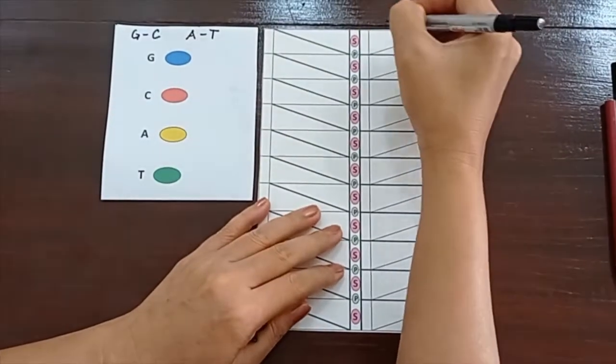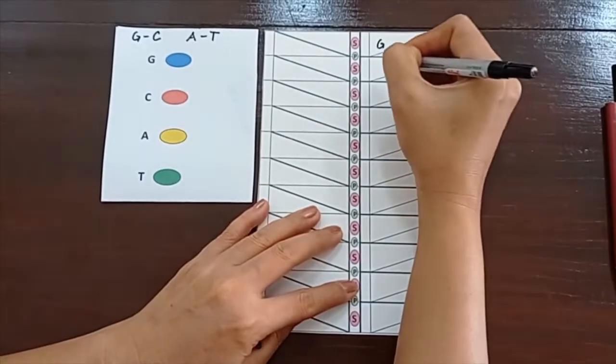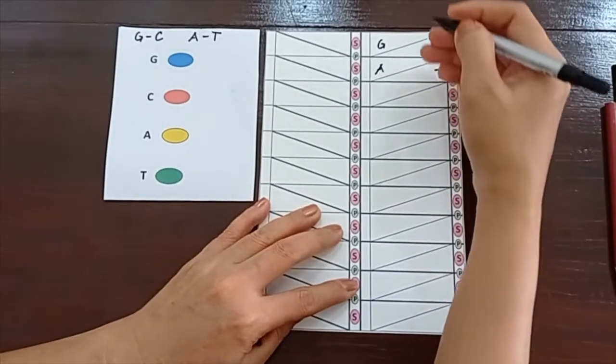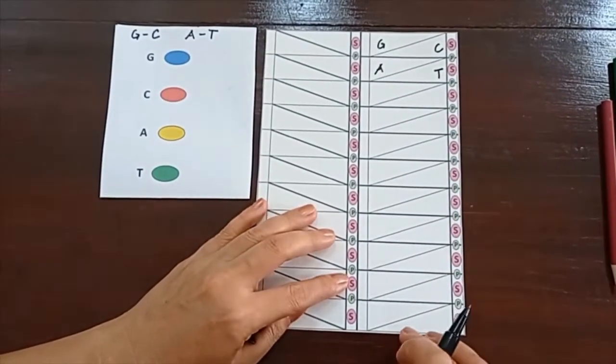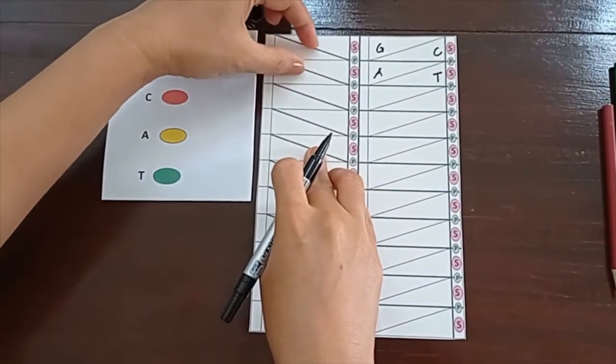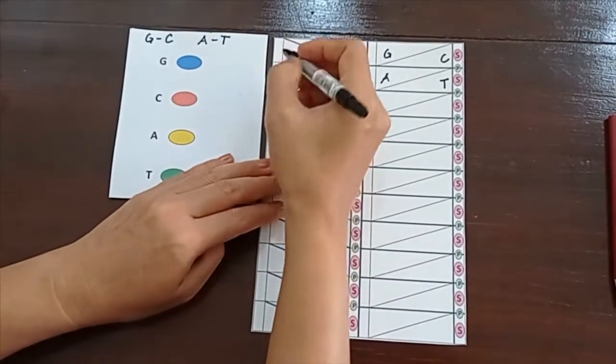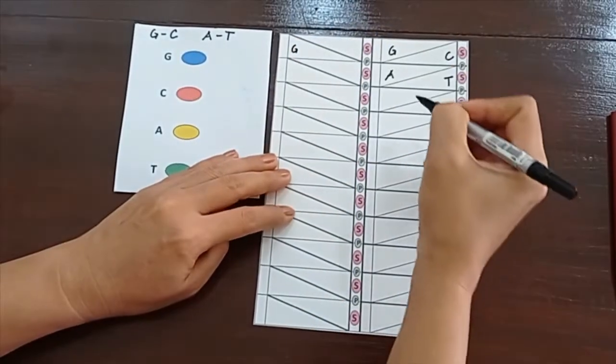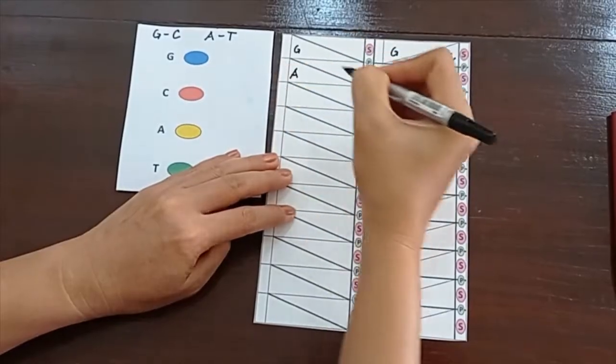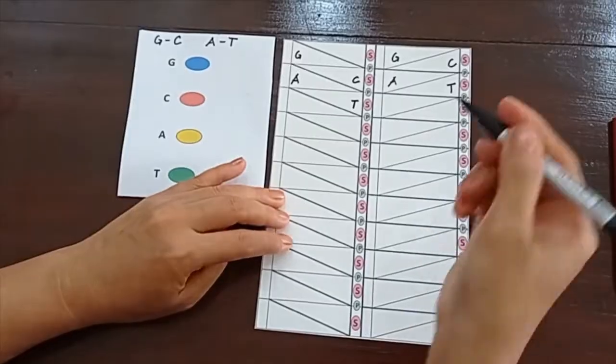For example, I'm going to write in here G that is paired with C. Here is A paired with T. And I will continue to fill that up until I reach the bottom. In here, you have to follow the dark diagonal lines. If you write G here, you have to write C here, and then A, and then T. And you do that until you also fill this up.